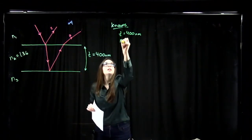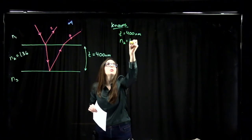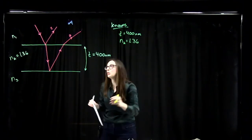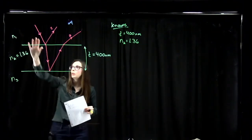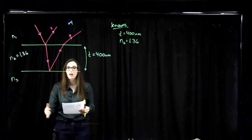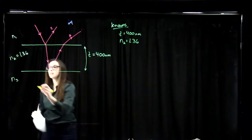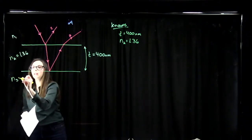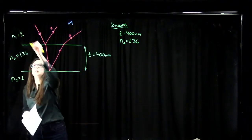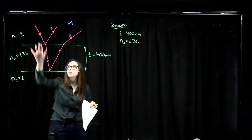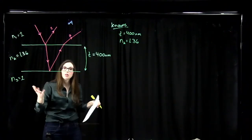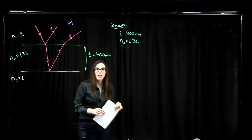So N2 is equal to 1.36, because that's our material sandwiched on either side by air. That means N3 is equal to 1 and N1 is equal to 1 — those are the mediums on either side of the thin film, which just happens to be air.